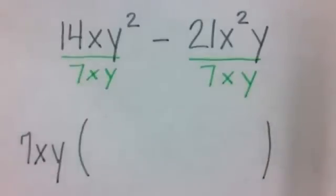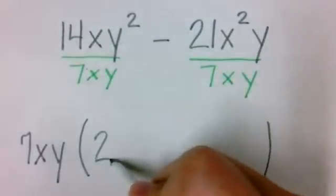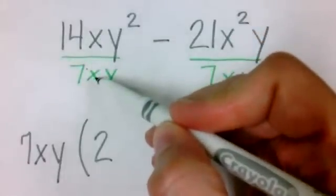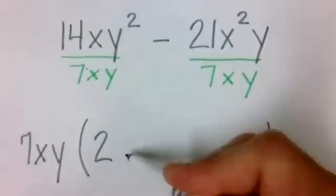Now let's divide. 14 divided by seven would give me two. X divided by x cancels each other out. Y to the second divided by y gives me a y.